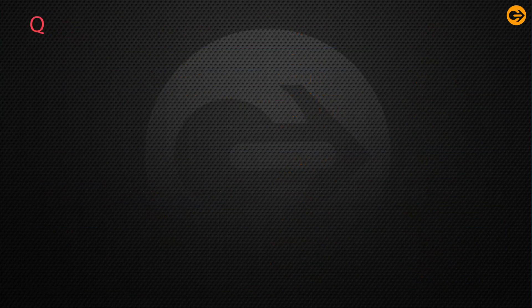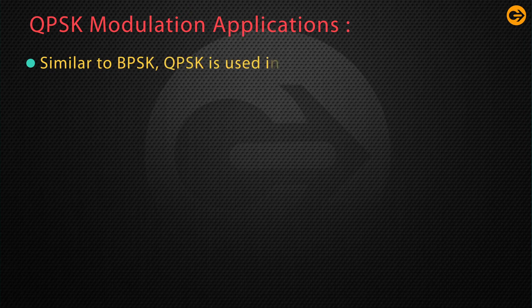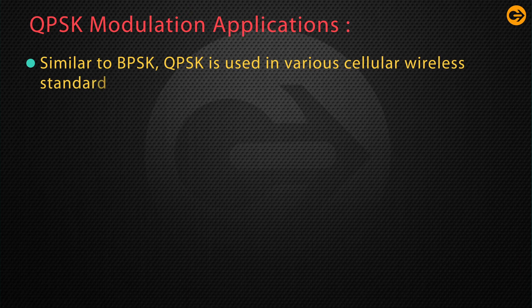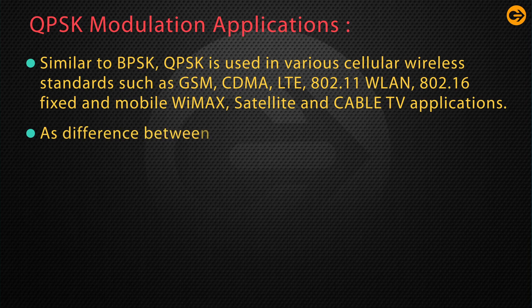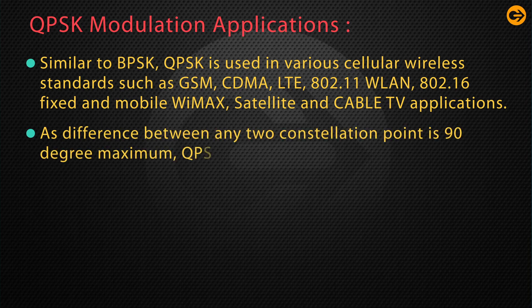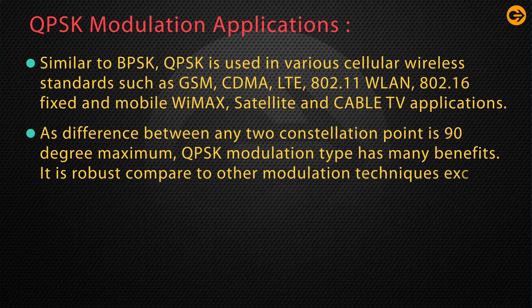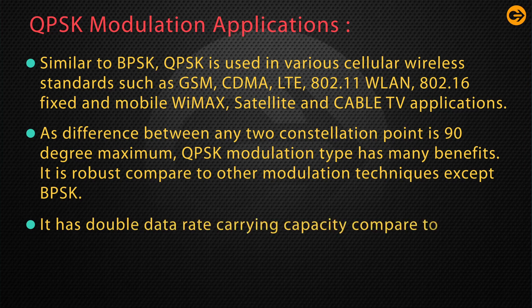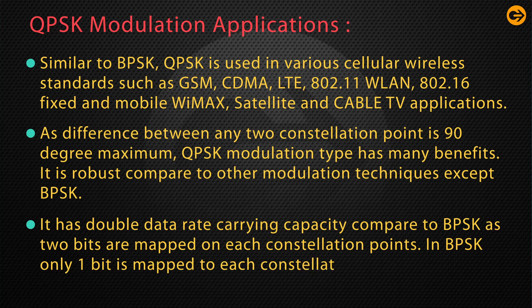Similar to BPSK, QPSK is used in various cellular and wireless standards such as GSM, CDMA, LTE, 802.11 WLAN, 802.16 fixed and mobile WiMAX, satellite, and cable TV. Since the difference between any two constellation points is 90 degrees maximum, QPSK is robust compared to other modulation techniques. It also has double the data rate carrying capacity compared to BPSK, as two bits are mapped to each constellation point, whereas in BPSK only one bit is mapped.